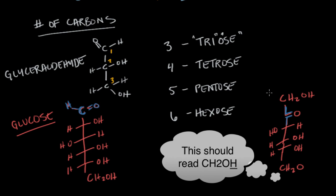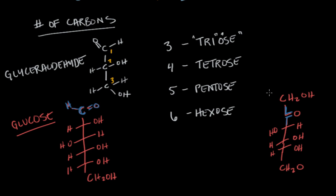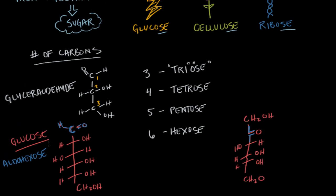And so that brings up the second naming prefix. We have to indicate whether we're working with an aldehyde or a ketone. So glucose would be more accurately referred to as an aldohexose. And that aldo is a reference to the fact that the functional group in this carbohydrate is an aldehyde. And fructose then on the other hand, fructose is a ketohexose. And the keto is a reference to the fact that the functional group here is a ketone.